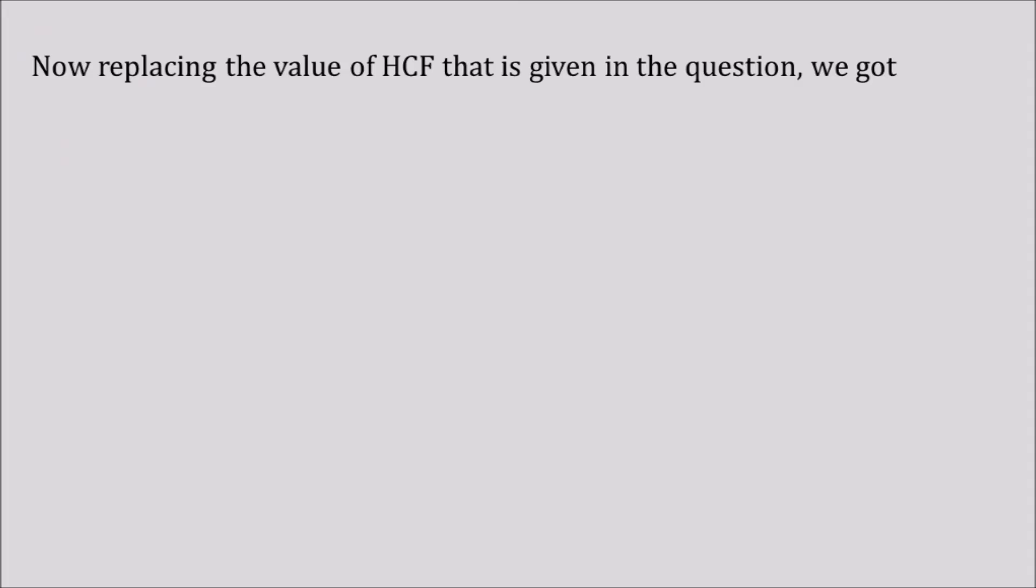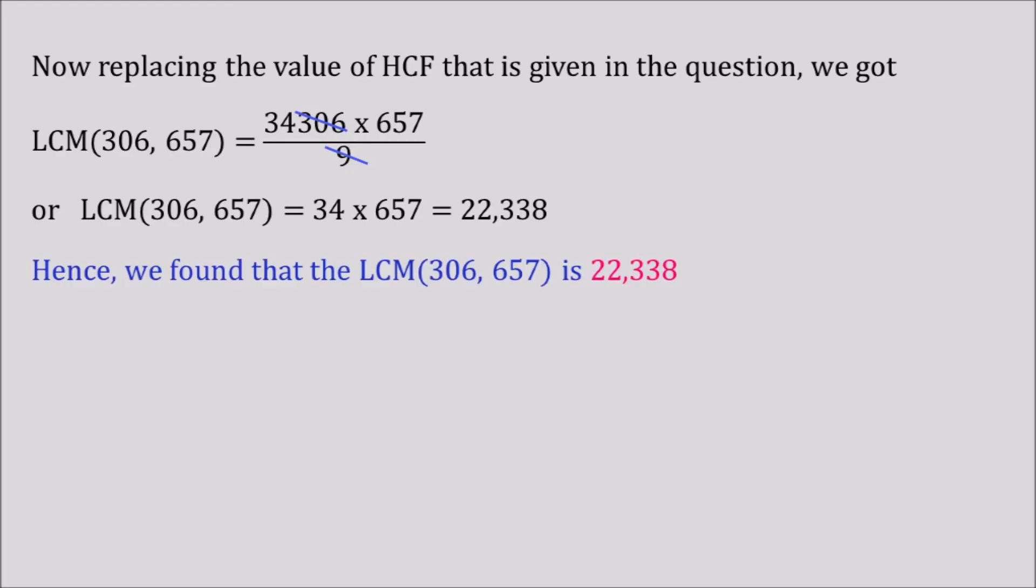Now replacing the value of HCF that is given in the question, we get LCM of 306, 657 equals 306 into 657 divided by 9. Now we will see that 306 is divisible by 9. Once we divide 306 by 9 we get 34. So I can write that LCM of 306, 657 equals 34 into 657 which equals 22,338. Hence we found that the value of LCM is 22,338 and this is our answer.